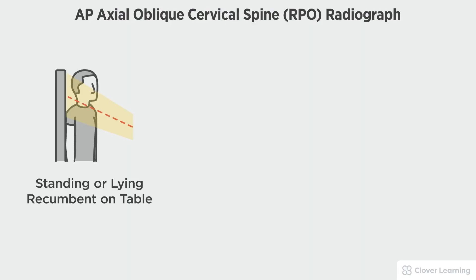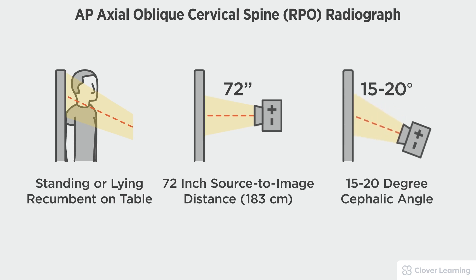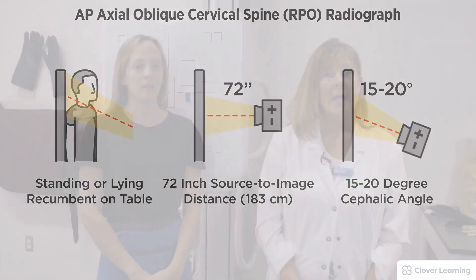In this view we will be demonstrating the AP axial cervical spine right posterior oblique, RPO. The AP axial oblique cervical spine RPO view should be performed with the patient standing at the upright bucky or lying on the table, with a 72 inch source to image distance and a 15 to 20 degree cephalic tube angulation.